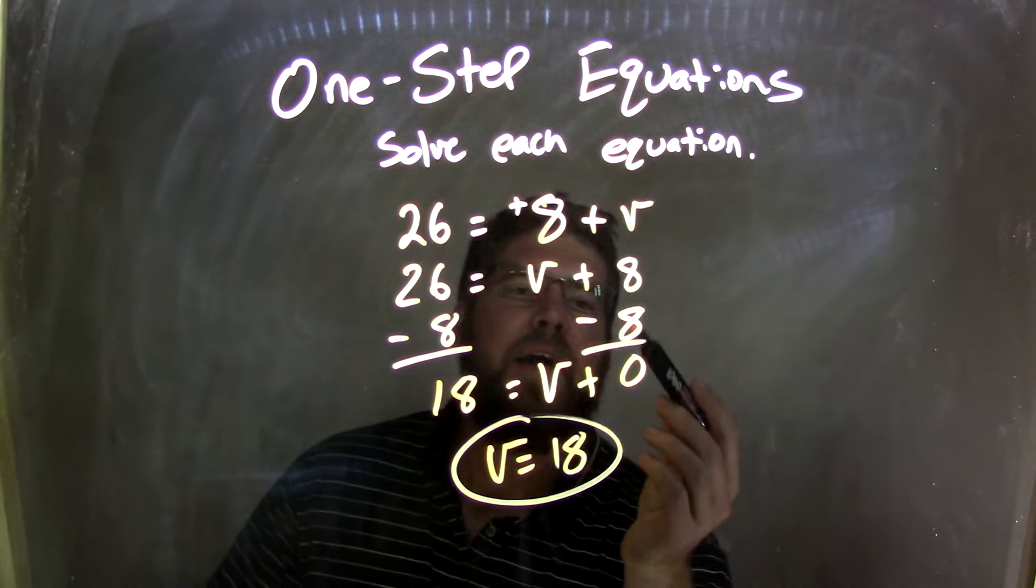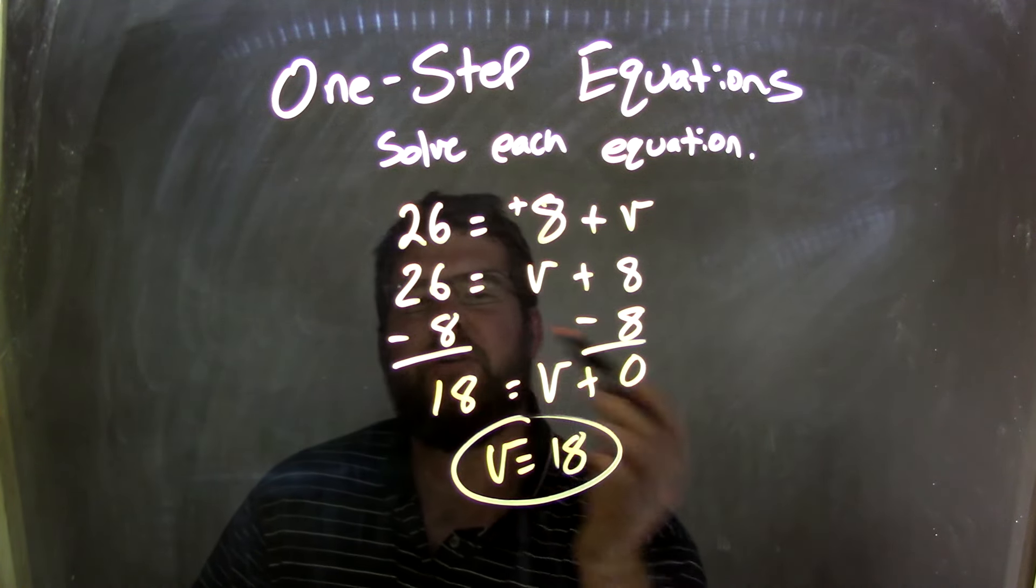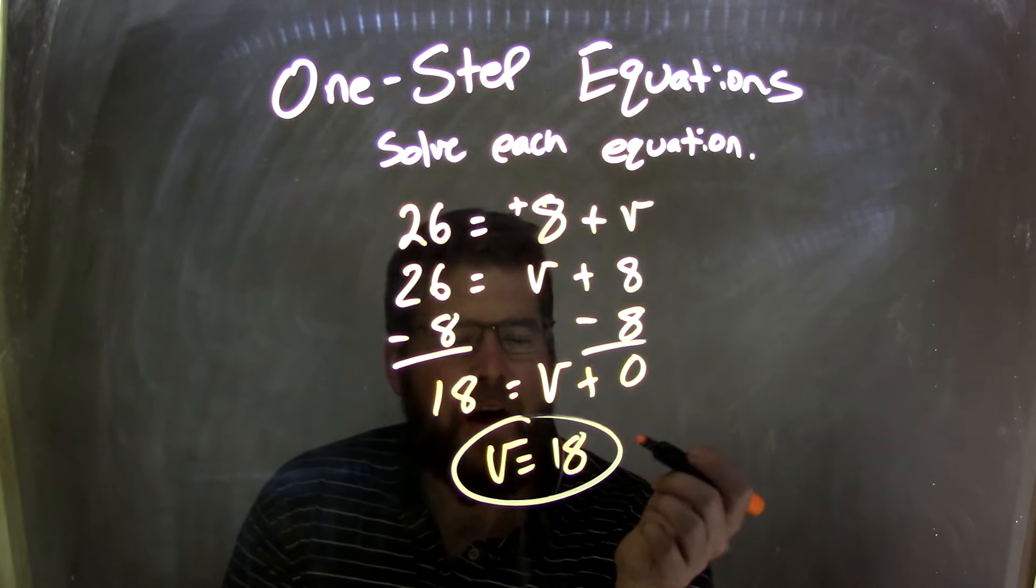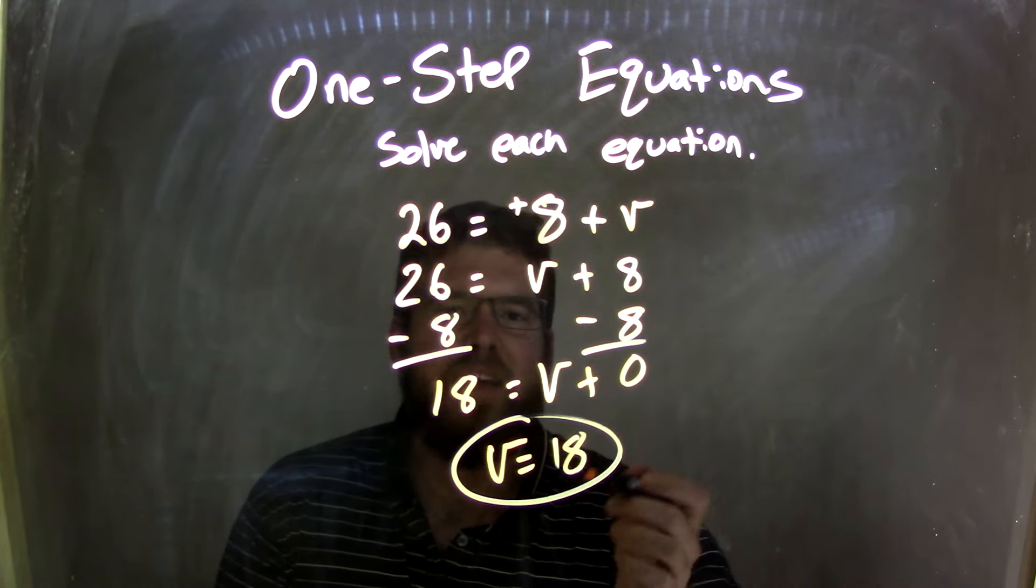Then I subtract an 8 from both sides to show the opposite of addition. 8 minus 8 is 0. I can do that to both sides here. 26 minus 8 is 18. And so I just rearrange it here to get our final answer of V equals 18.